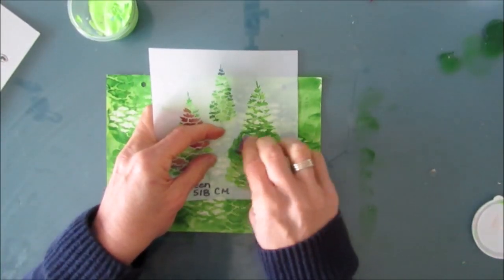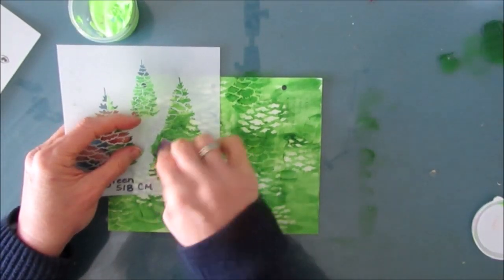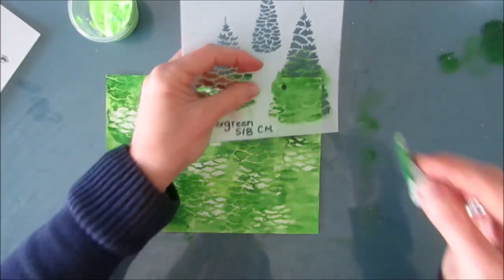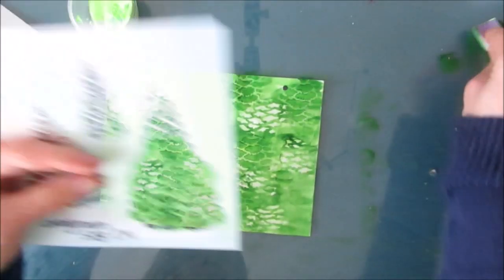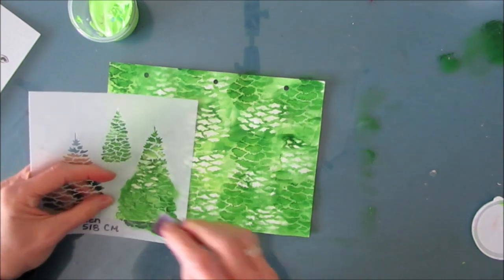If I wanted this green to be darker I could add a smidge of black to it and that would make it darker so I would have another tone. But I'm going to show a different way to get another tone in this Christmas tree.